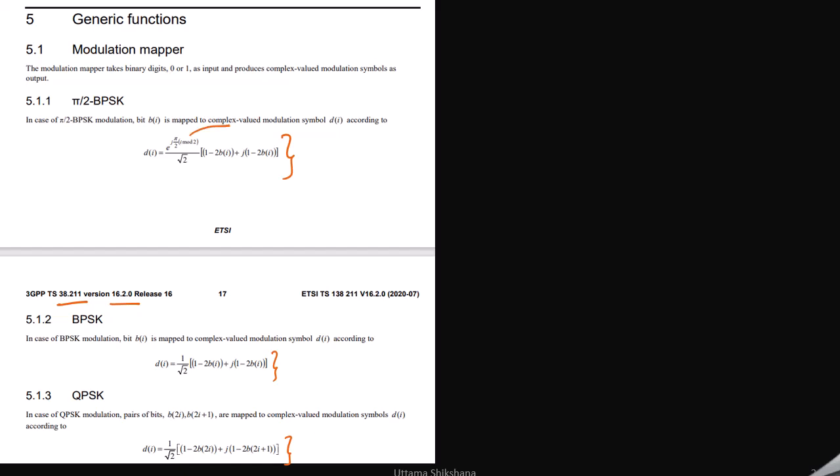First, let us see how the constellation looks like after performing this operation. For π/2 BPSK, for even number of samples the constellation points would lie at these locations.